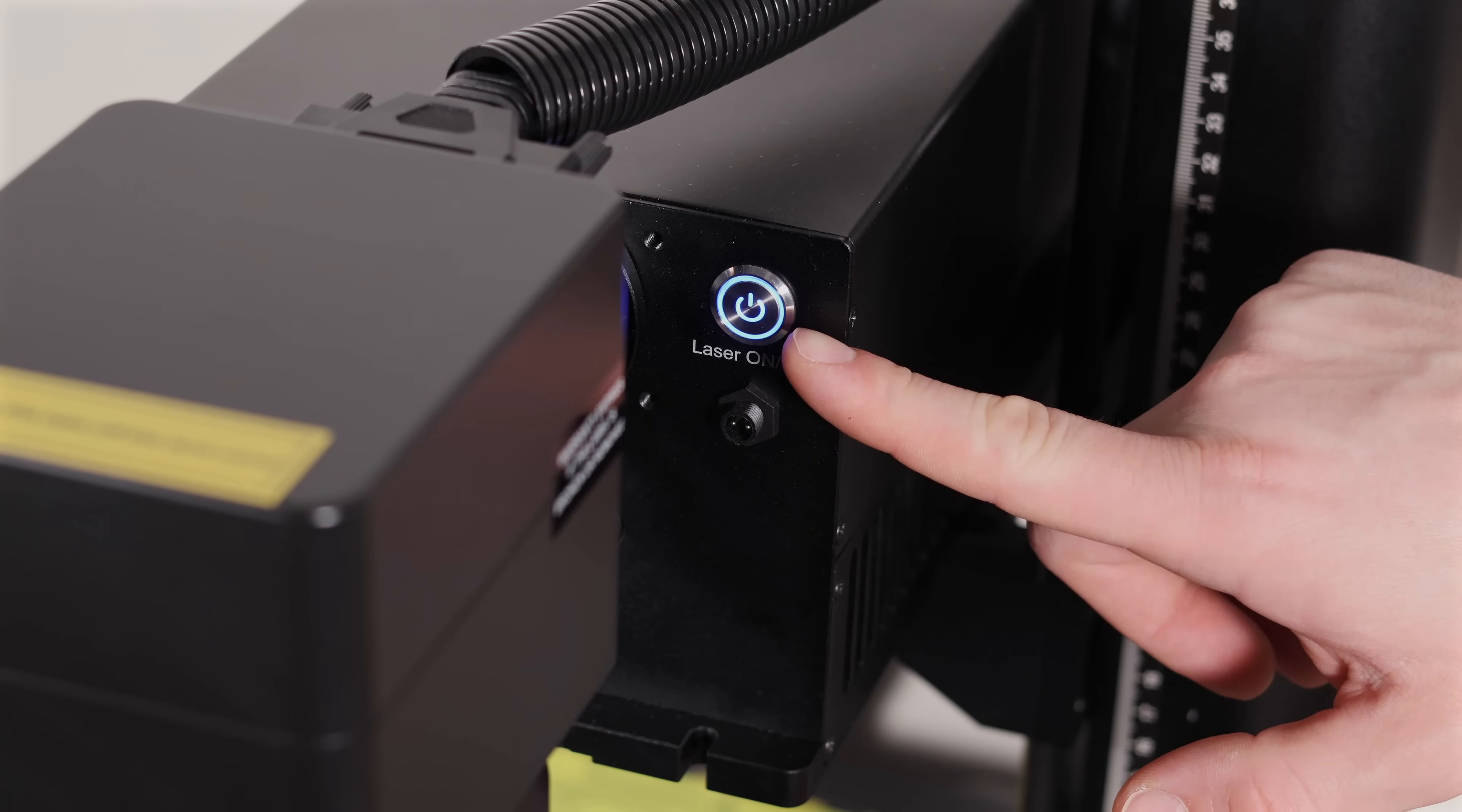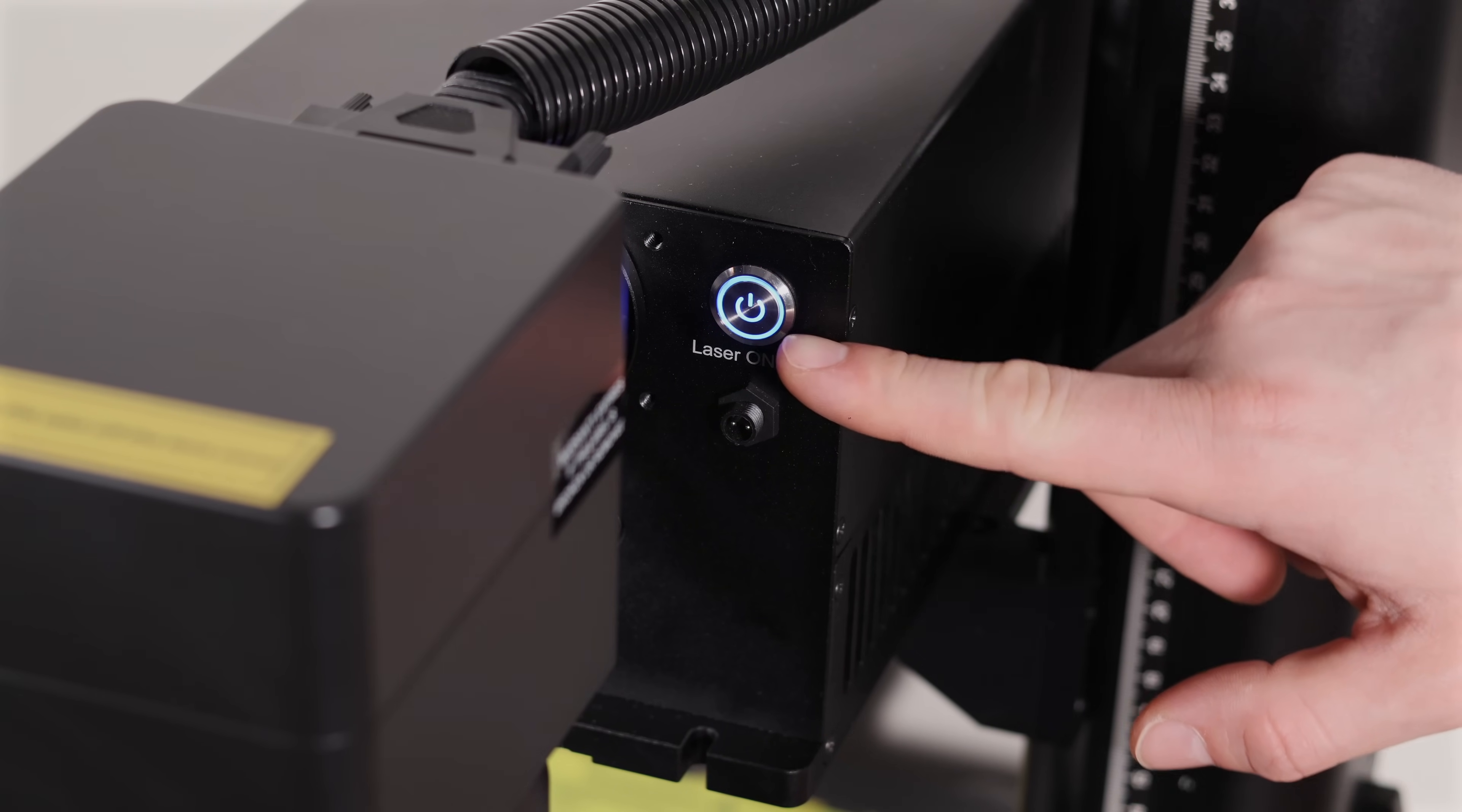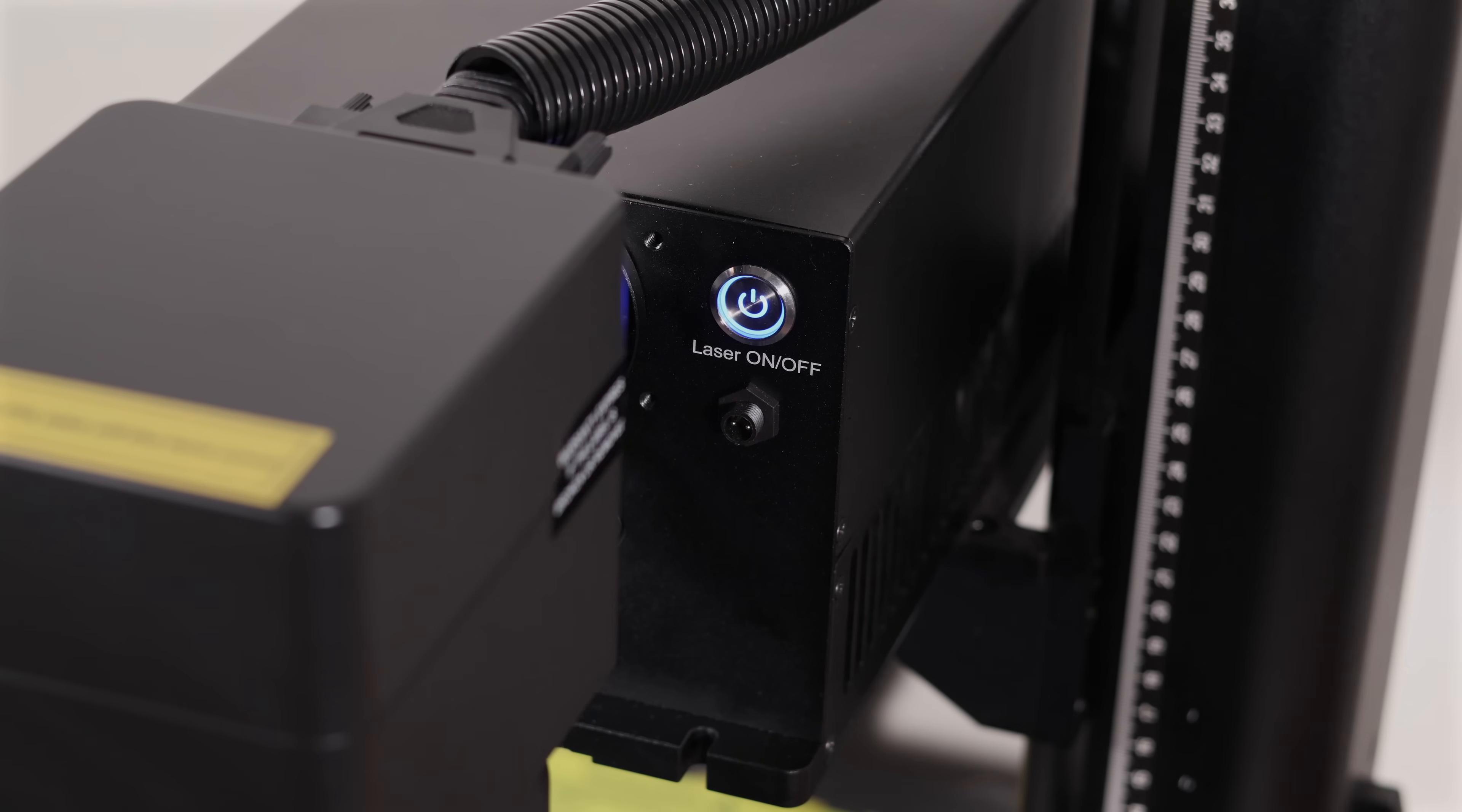Another key difference of the Omni compared to other lasers is its dual power buttons – one for the base and another for the laser head. Once you power on the base, you'll notice a flashing light on the laser head's power button. When you press this button, the laser head will begin its warm-up process, which takes about two minutes.